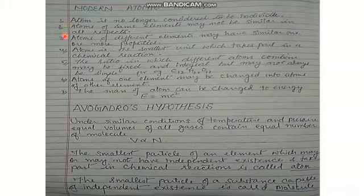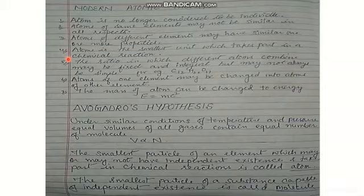Atoms of different elements may have one or more similar properties. The atom is still the smallest unit which takes part in a chemical reaction, but the ratio in which different atoms combine may be fixed and integral, though not always simple.